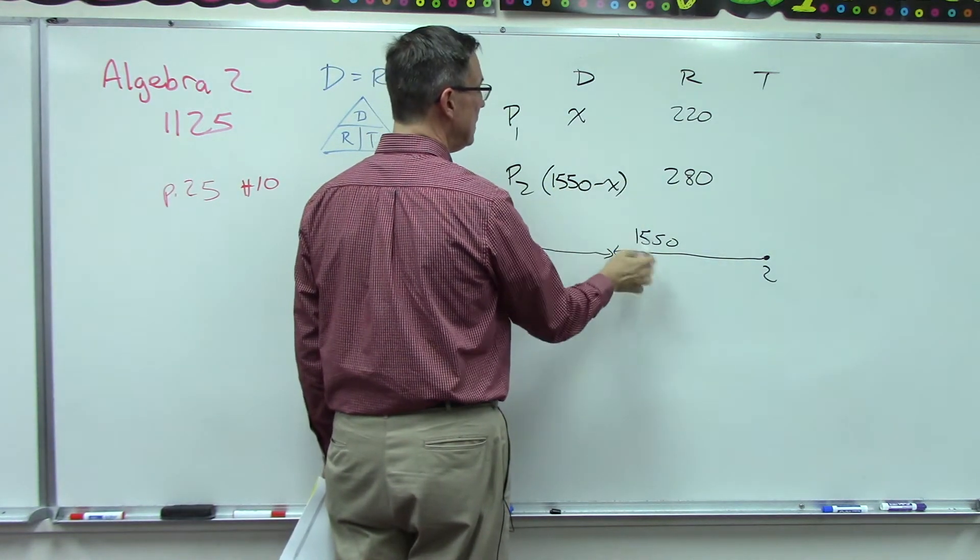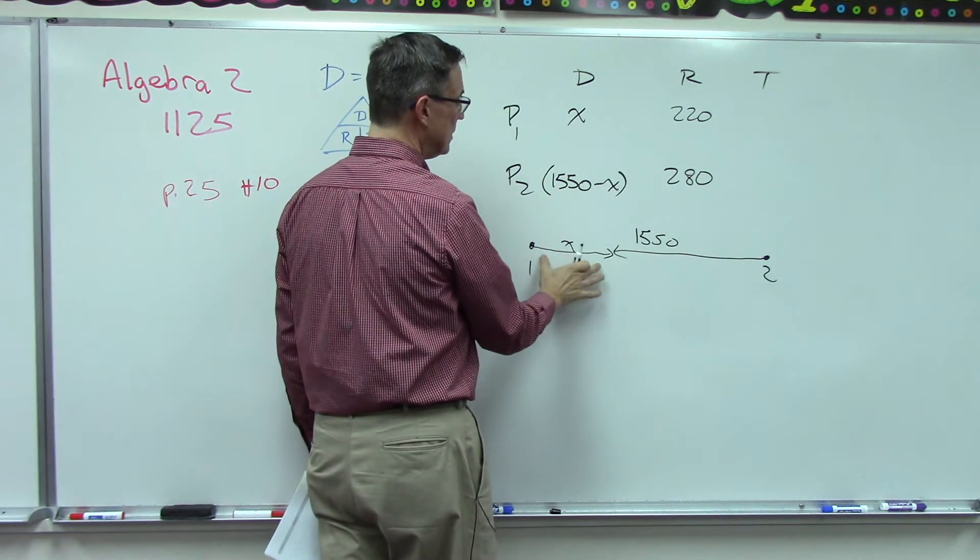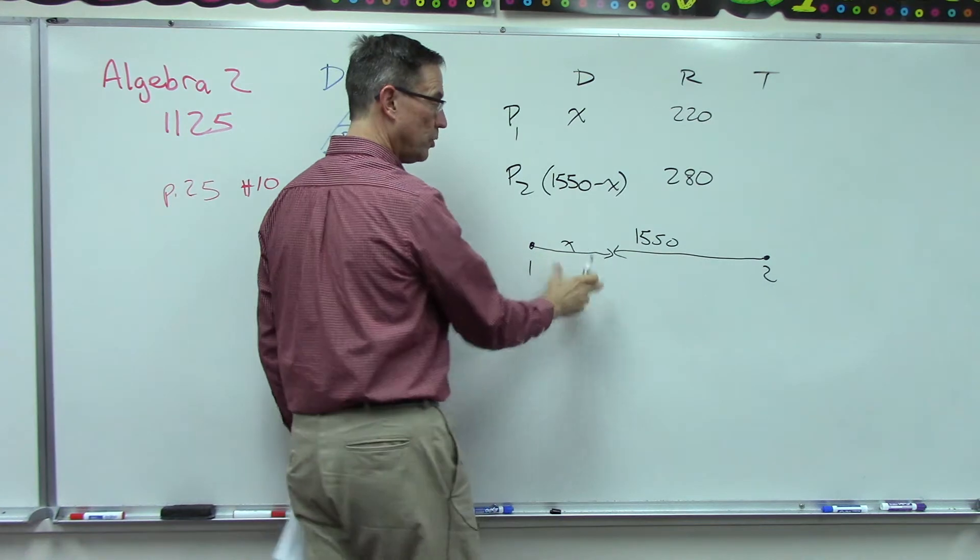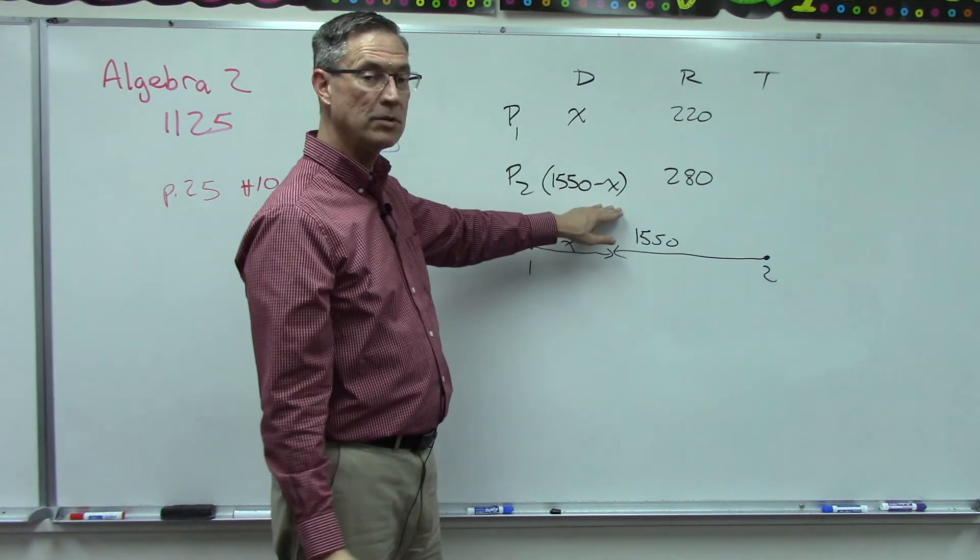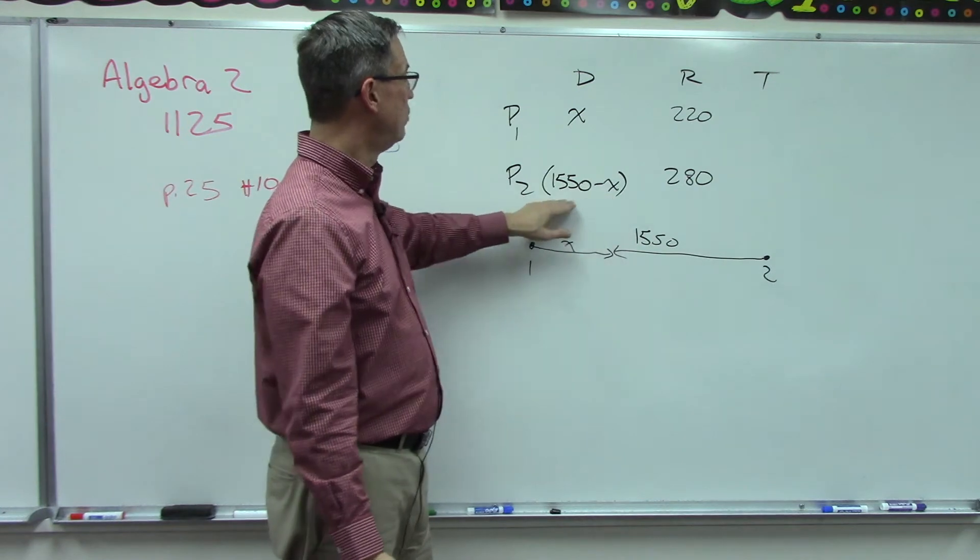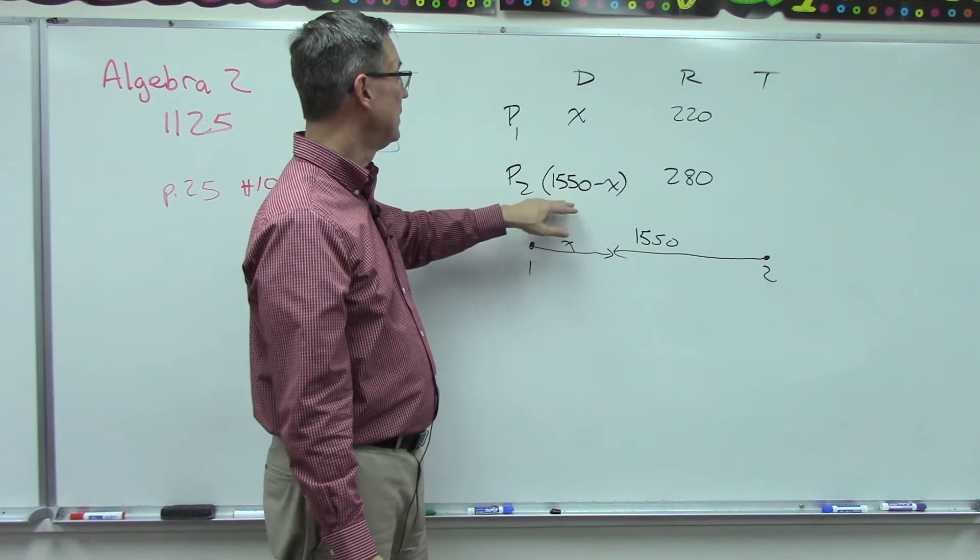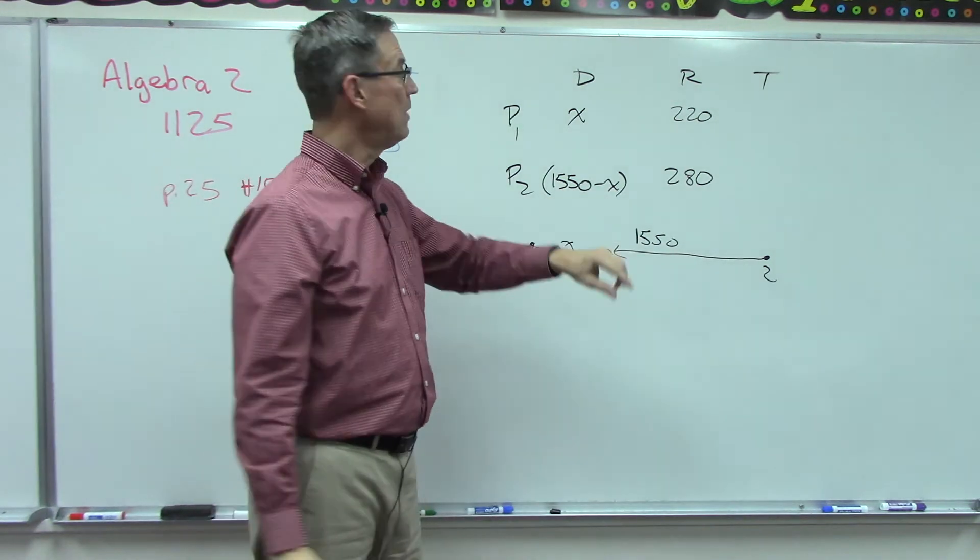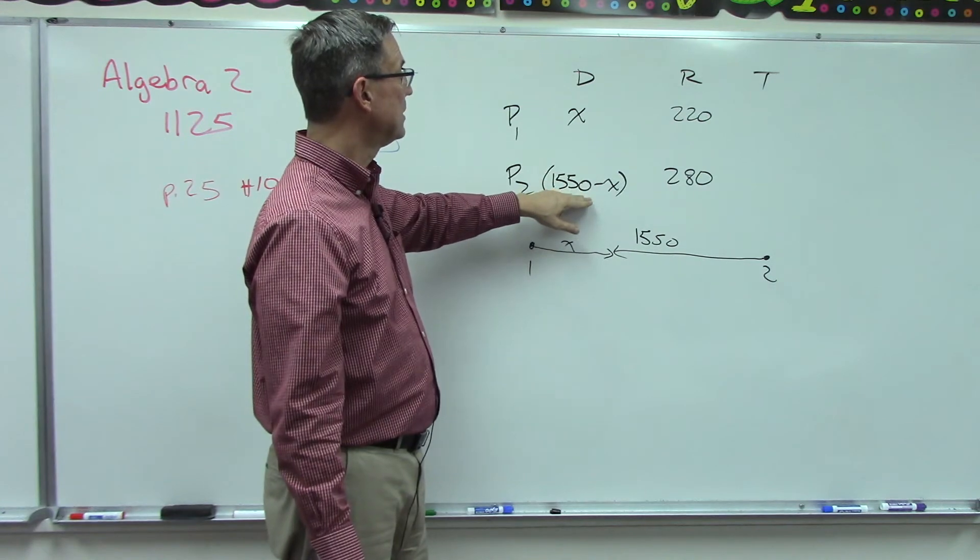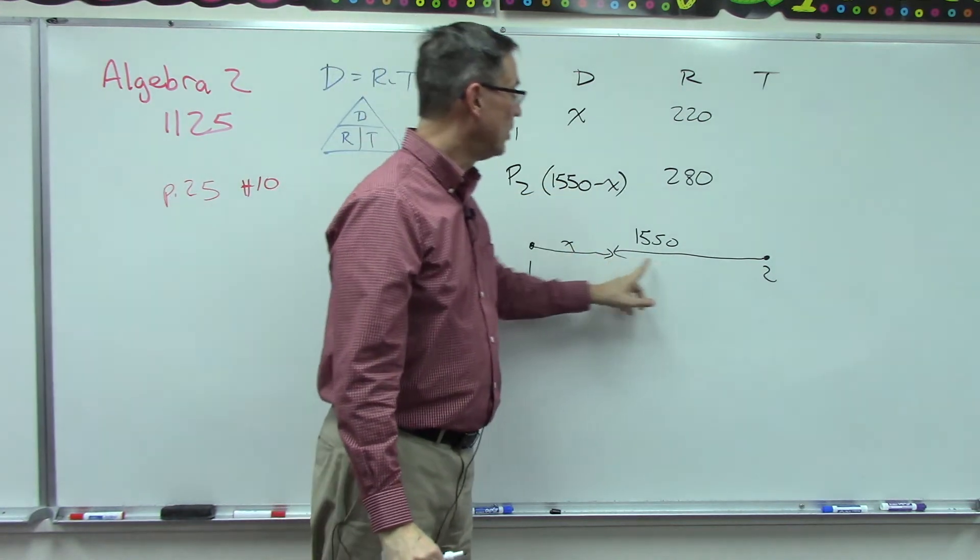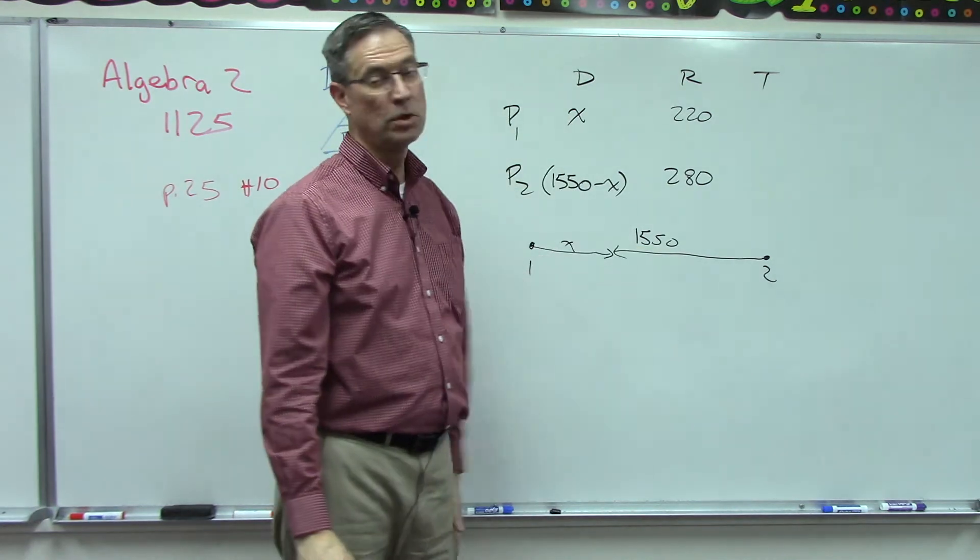Whatever this plane traveled, this one is going to be this quantity: 1550 minus the distance the first plane traveled. So I could now plug in 550 and boom I would get 1000. I could plug in 700, boom I'd get 850. Whatever the first plane's distance is, this one has to be the difference because when you add these two together it has to equal the total distance.